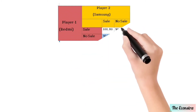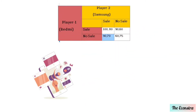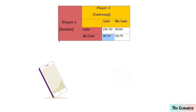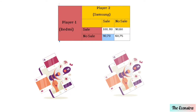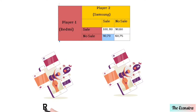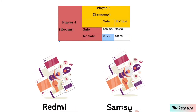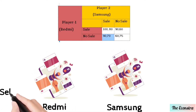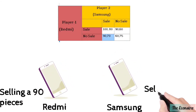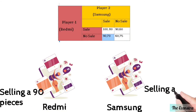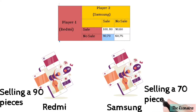In the third condition, Player One is not on sale and Player Two is on sale. Player One sells 90 goods and Player Two sells 70 goods.